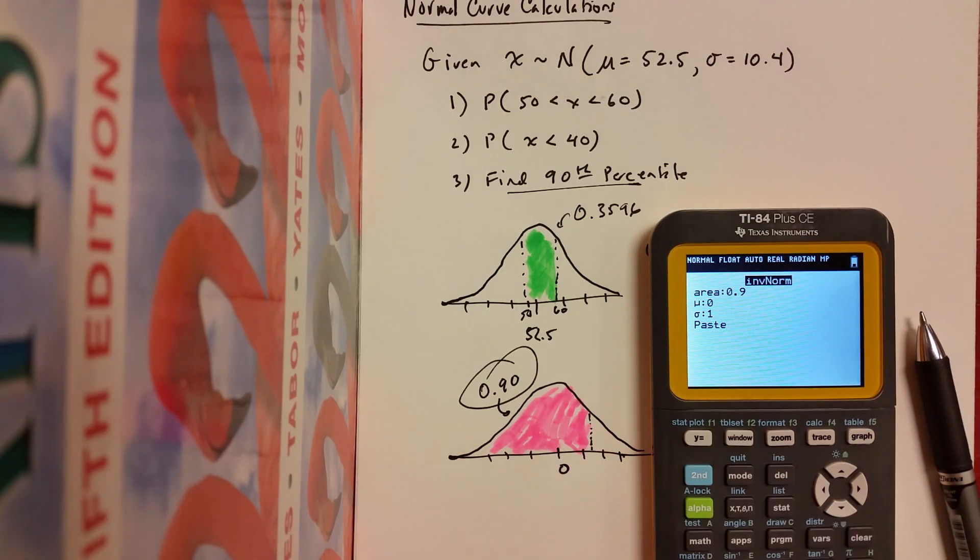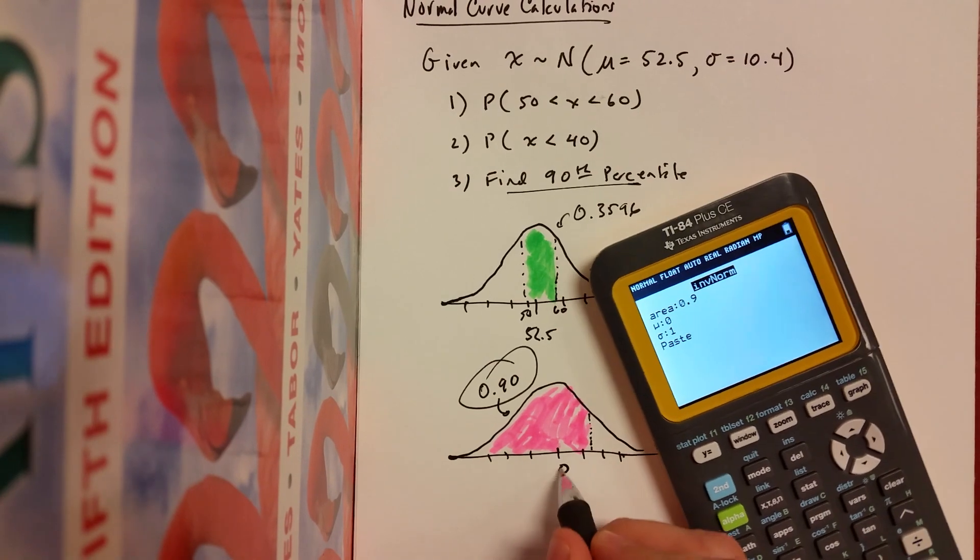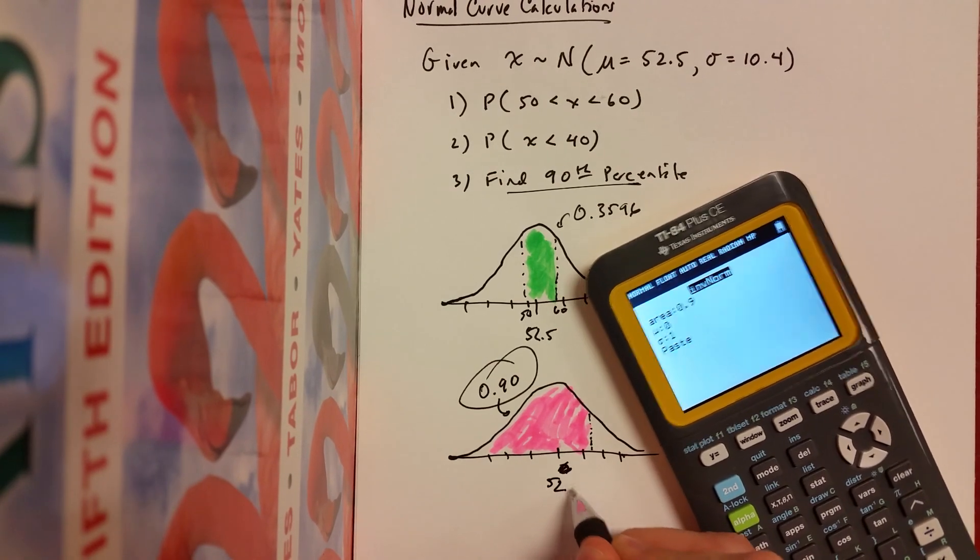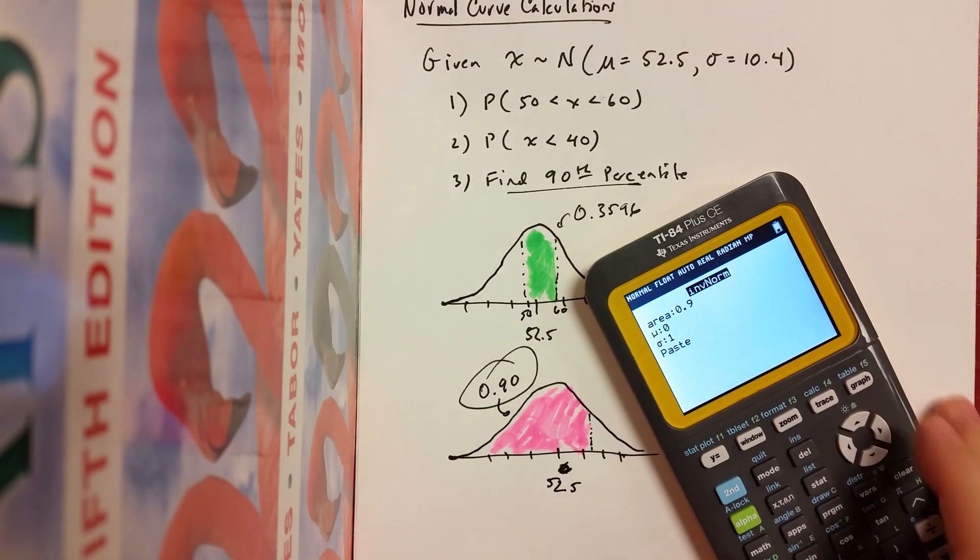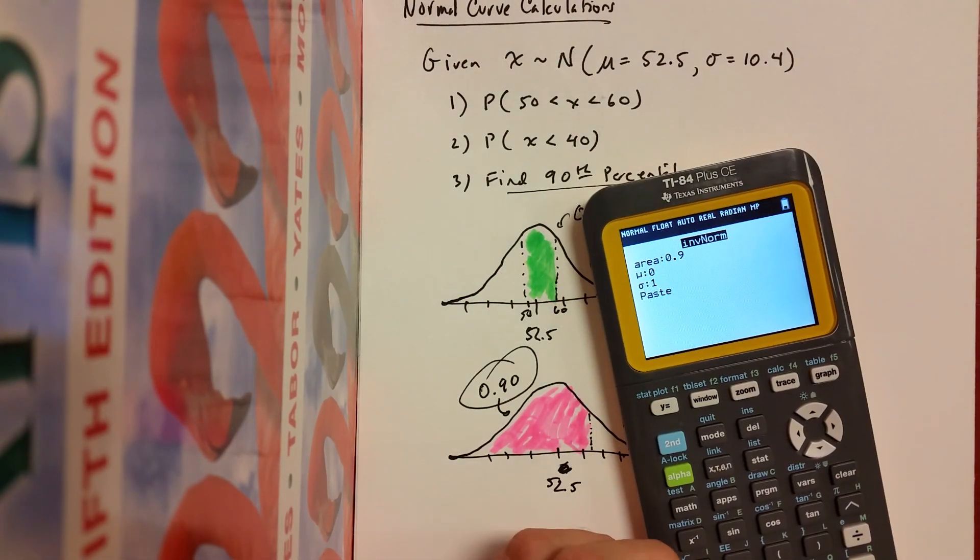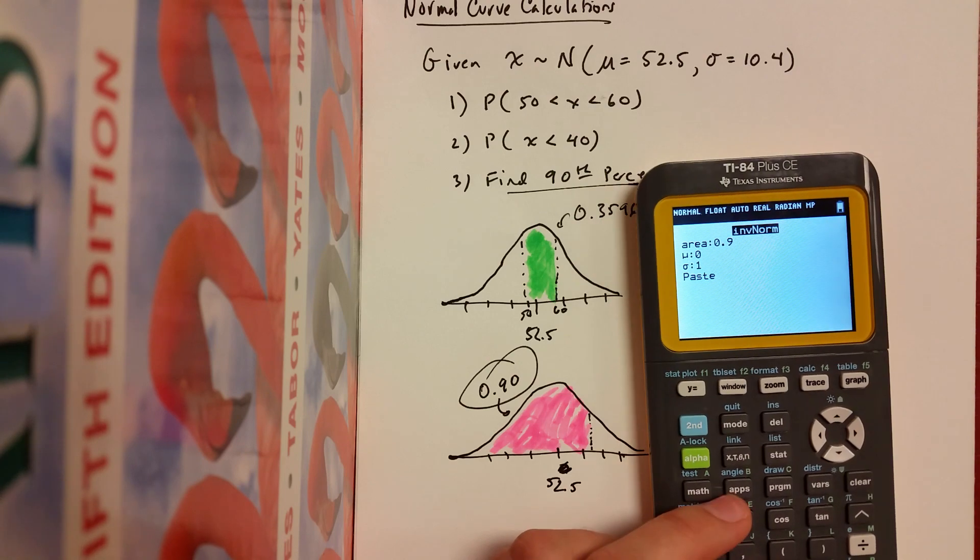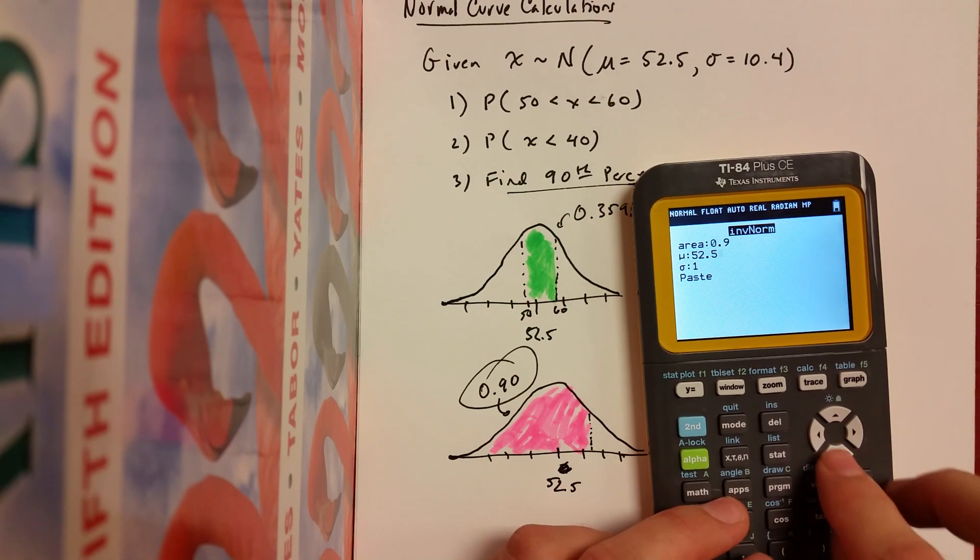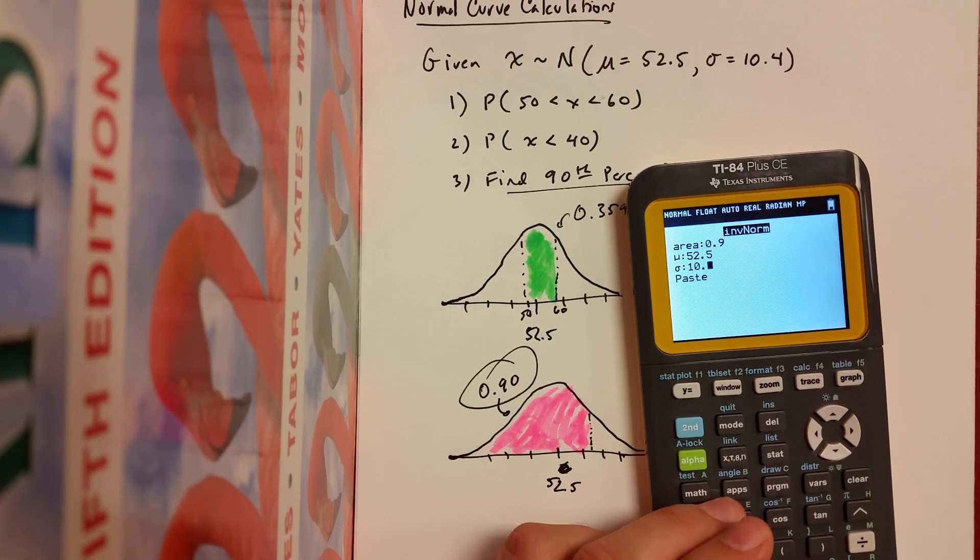So I'm going to fix that mean to be 52.5. And I'm guessing the answer will be a little bit more than one standard deviation above the mean. So let's see. The standard deviation was 10.4. So I have the area, the mean, the standard deviation. Let's paste that.